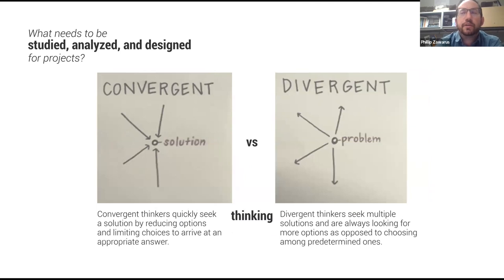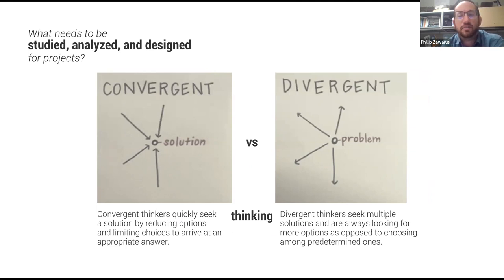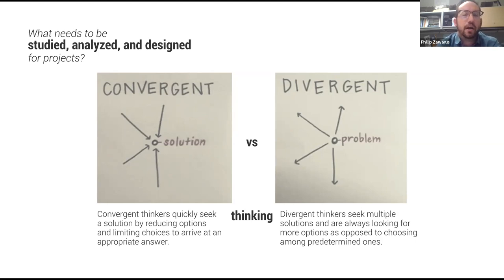When going through this process, the biggest challenge is going from a convergent to a divergent form of thinking. With convergent thinking, we almost have a preconceived idea of what we want the outcome to be, versus a more divergent process where you use the data to tell us what the needs of a project site are. You're using the evidence and information to dictate your next moves instead of trying to fit data into a contrived narrative to serve your own agenda. That information should prepare your next steps.